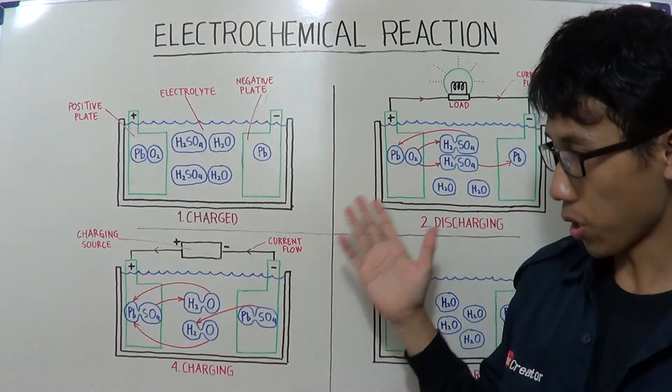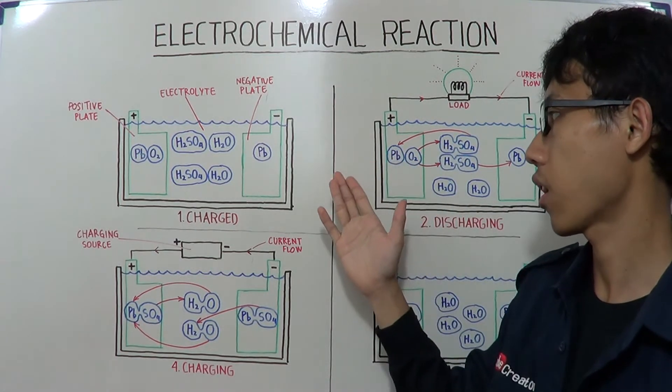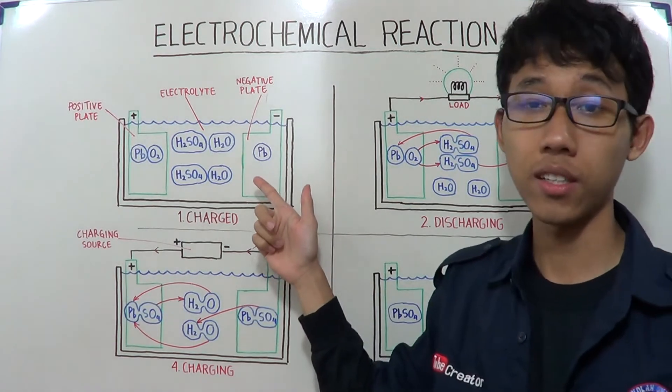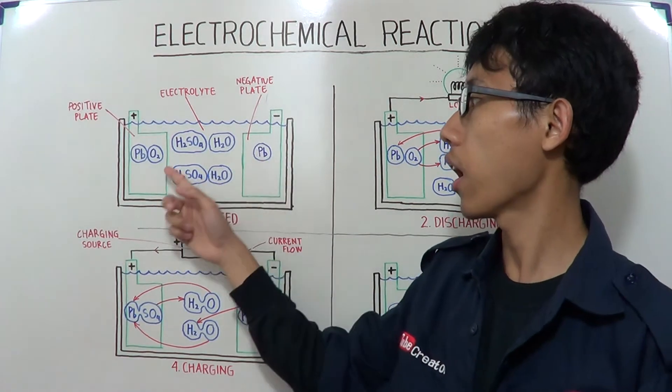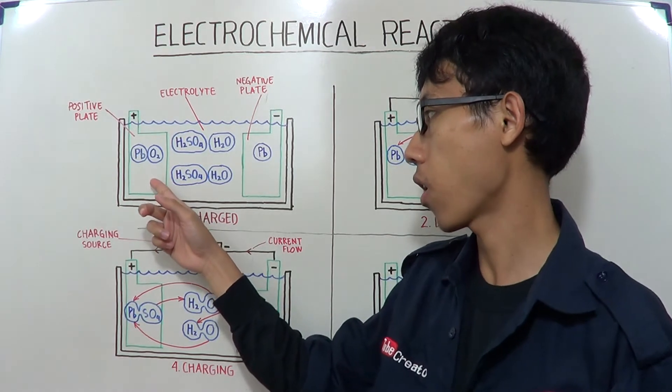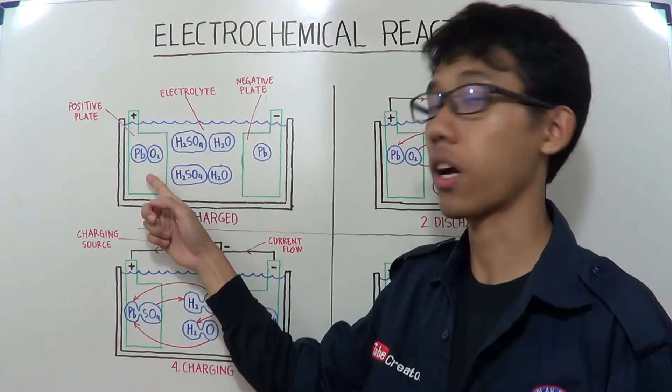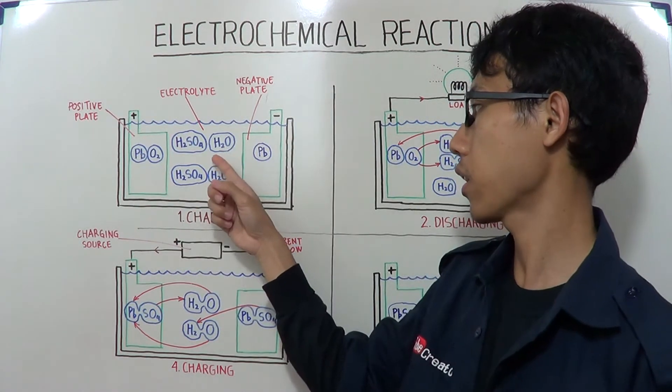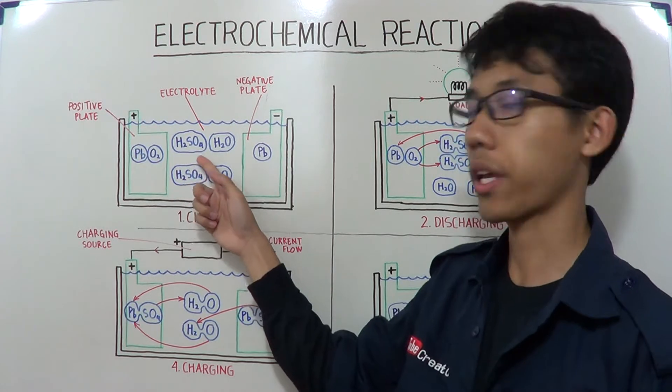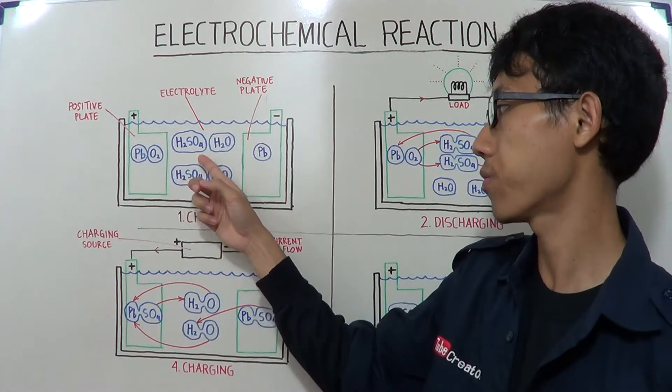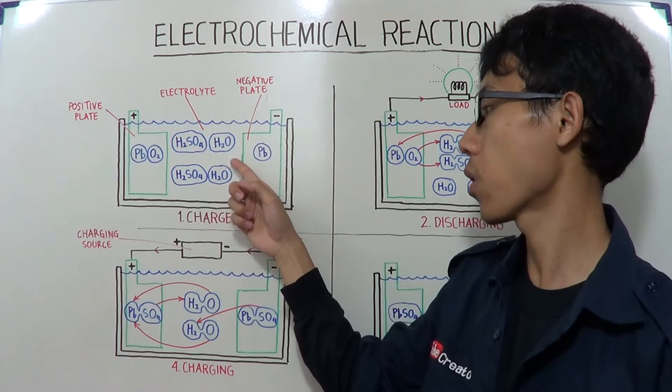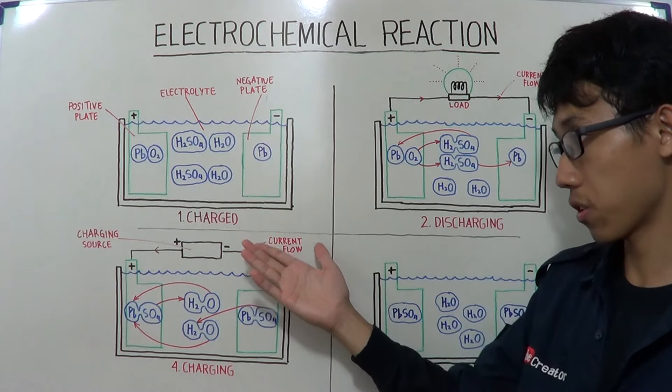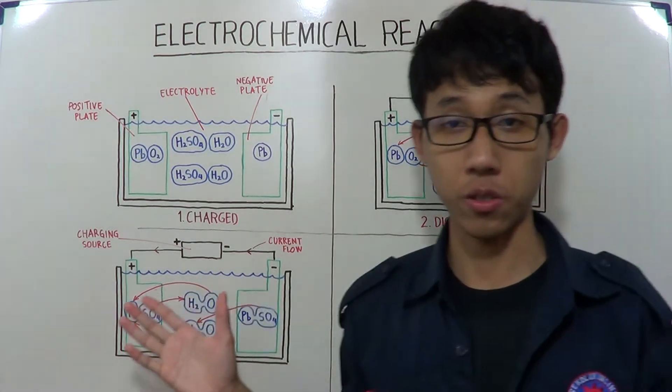A fully charged battery consists of a negative plate of sponge lead or PB, a positive plate of lead dioxide or PbO2, an electrolyte of sulfuric acid or H2SO4 and water or H2O. That's the first stage.